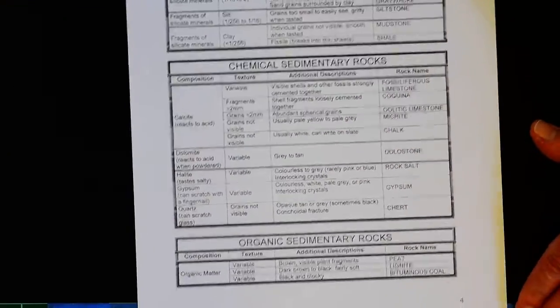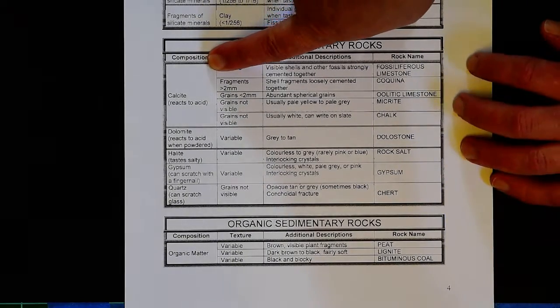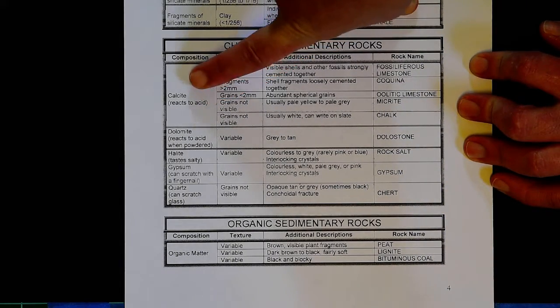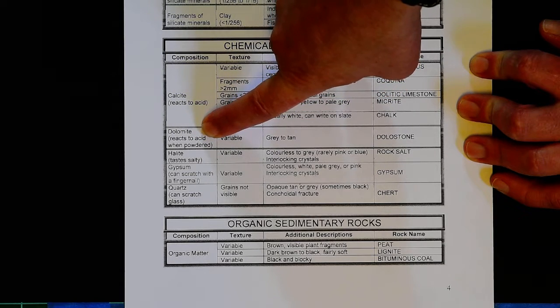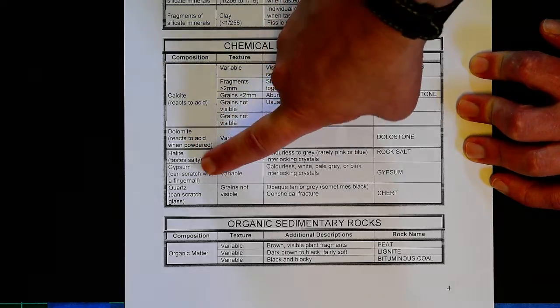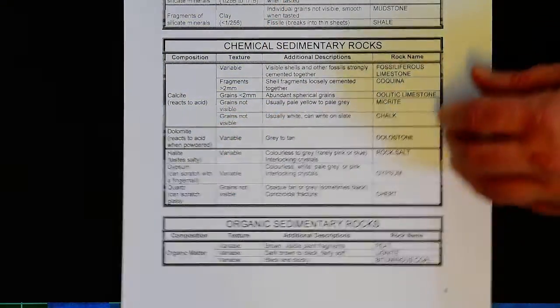If it's chemical, well the next thing you look at in chemical sediments is the composition. Is the rock made out of calcite which reacts to acid, dolomite which reacts when powdered, halite which tastes salty, gypsum which is very soft, or quartz that can scratch glass?